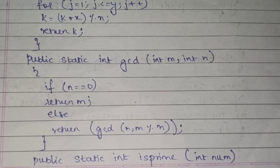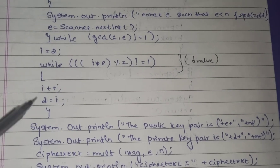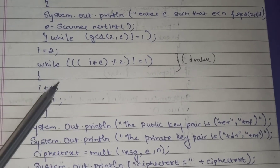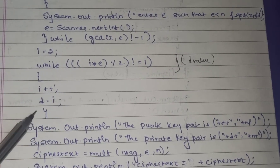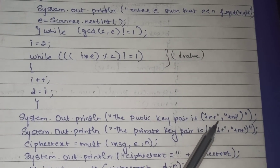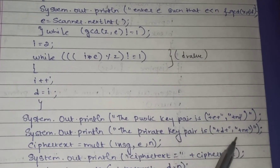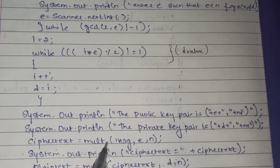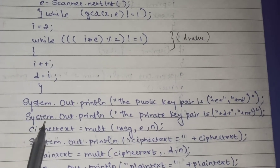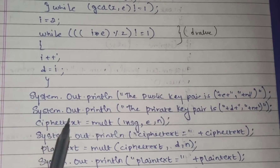To find d, i is initialized to 2 and a while loop runs as long as (i * e) mod z != 1, incrementing i each iteration until d is found. The public key pair (e, n) and private key pair (d, n) are then printed. To compute the ciphertext, the mult function is called with parameters (message, e, n), since c = m^e mod n requires all three values.